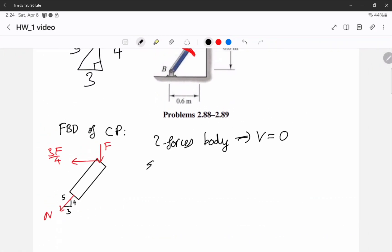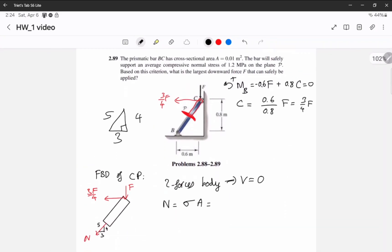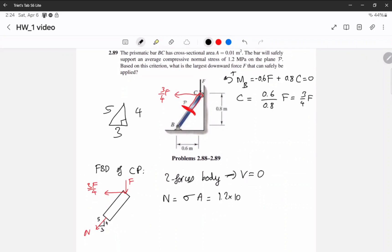And I can write F in the Y direction. Oh, yeah, before this, do you know what N is? N is just stress times area. Stress, we know what stress is. Stress is 1.2 MPa, so N is 1.2 times 10^6, then area is 0.01, then this is 12,000 N.